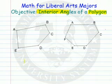So on the left-hand side, we have a polygon that has five sides, so it's called a pentagon. And on the right-hand side, we have one that has six sides, so it's called a hexagon.